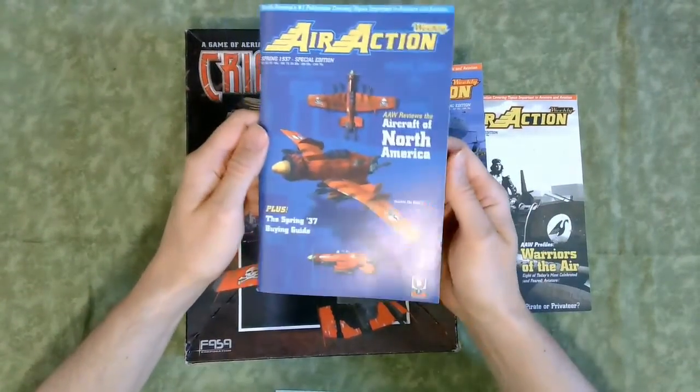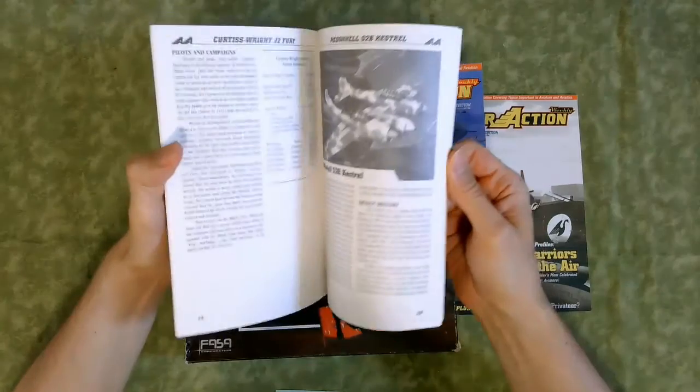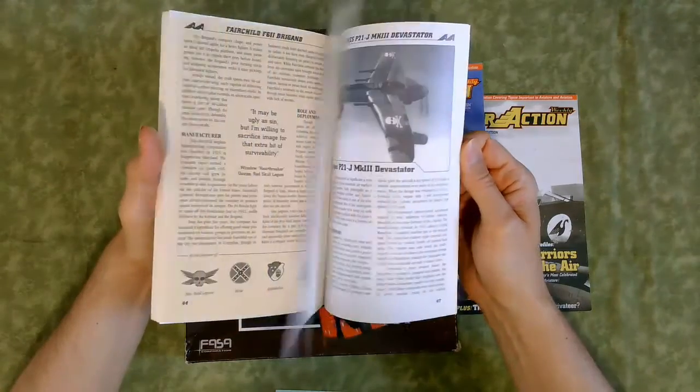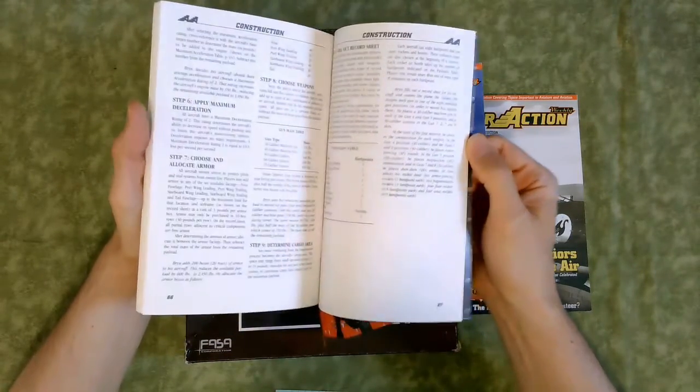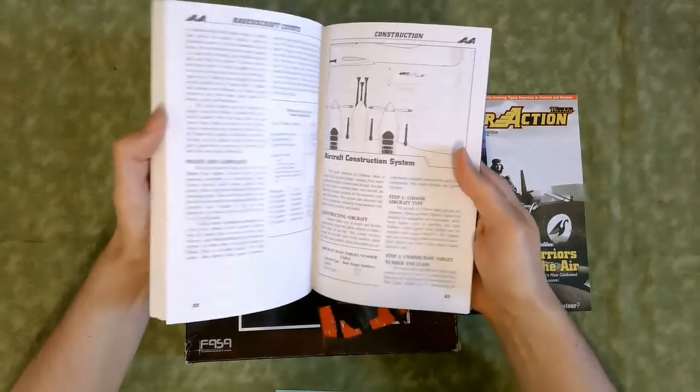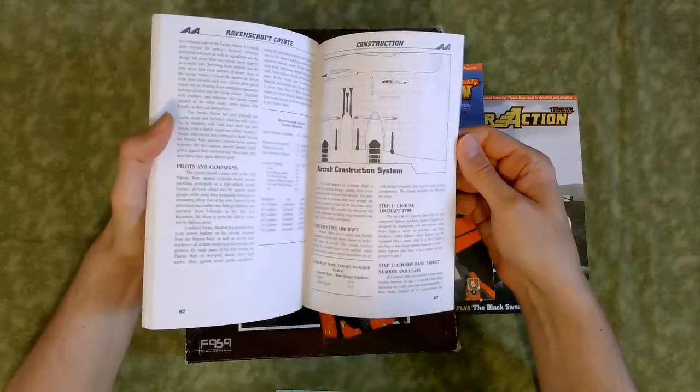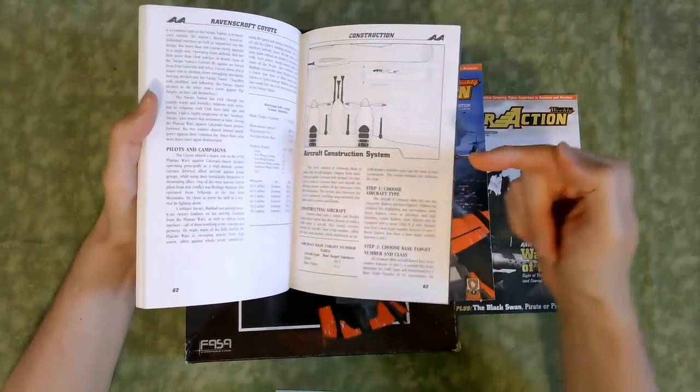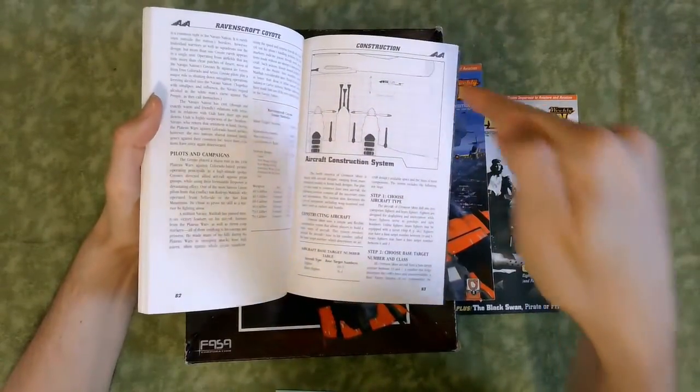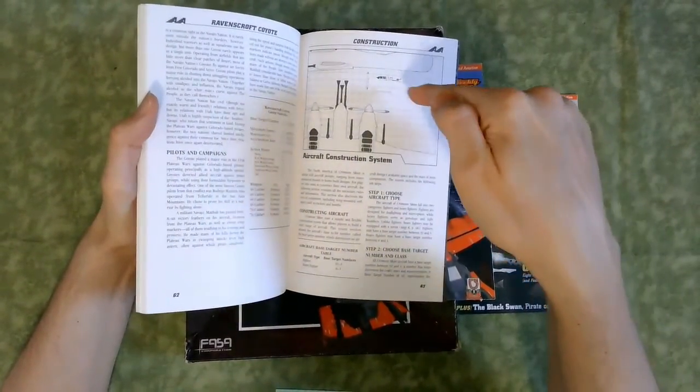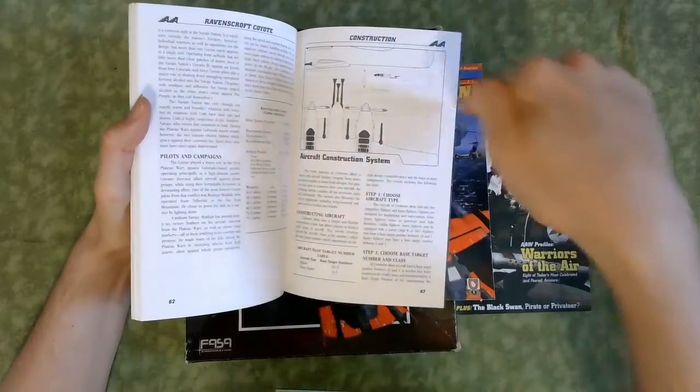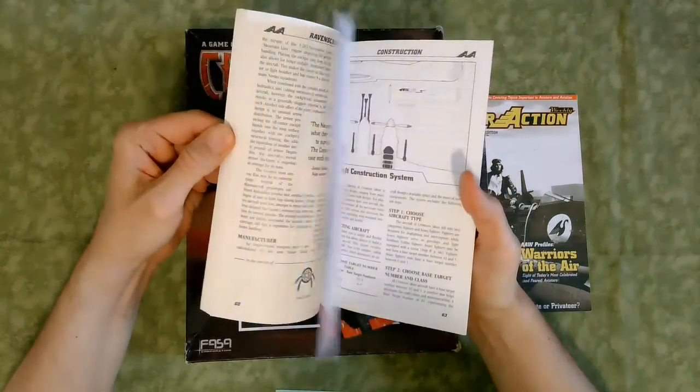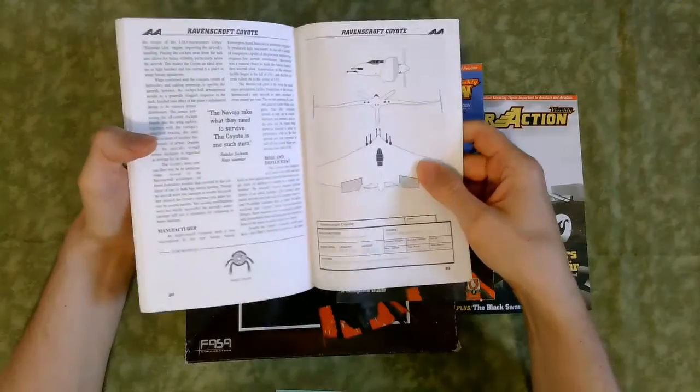Then you have aircraft of North America. This one's kind of fun. It has stats for all of the different aircraft. It does have construction rules. So it's useful for the construction rules. I've looked at it. It's actually simpler than Battletechs. The worst part though is trying to translate this system onto the grids you get for blank sheets. Because the components may not go where you want them to. So that's kind of a little bit awkward. And they also describe a few things. This is the Ravenscroft Coyote.